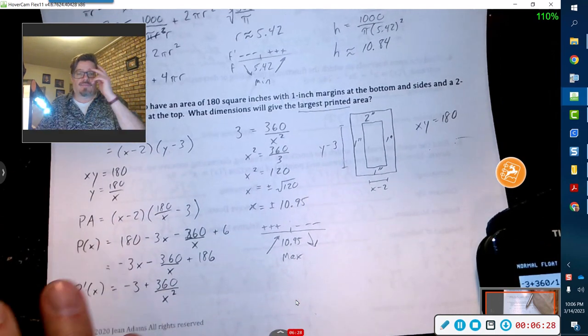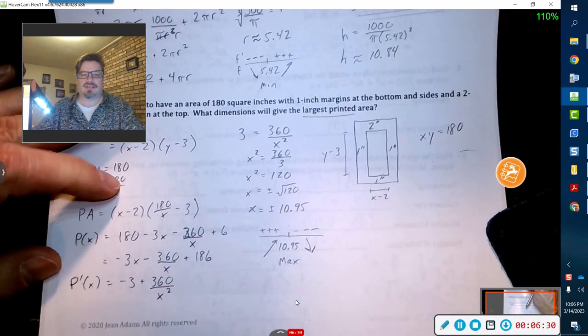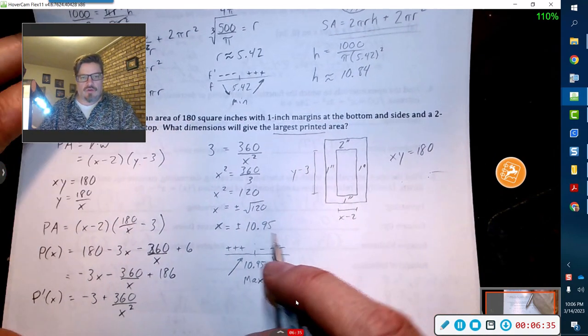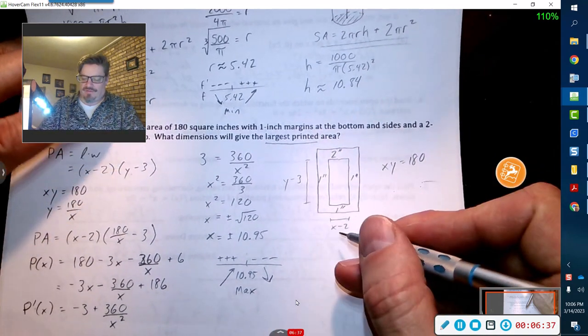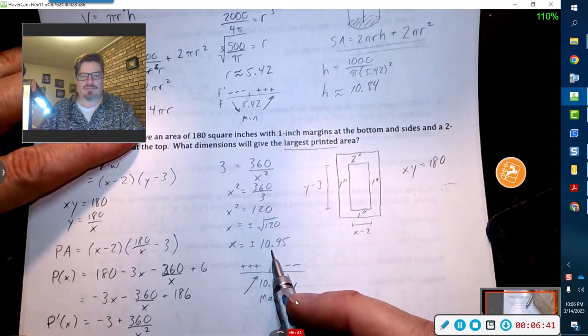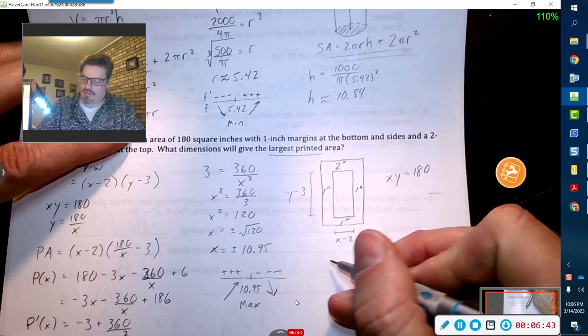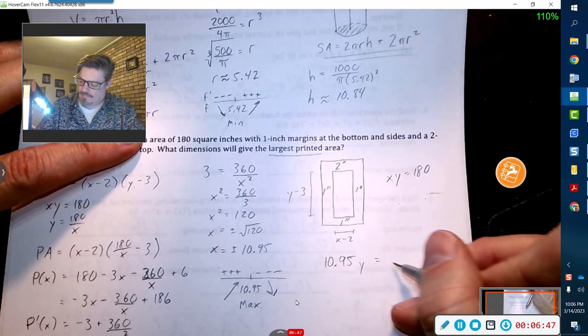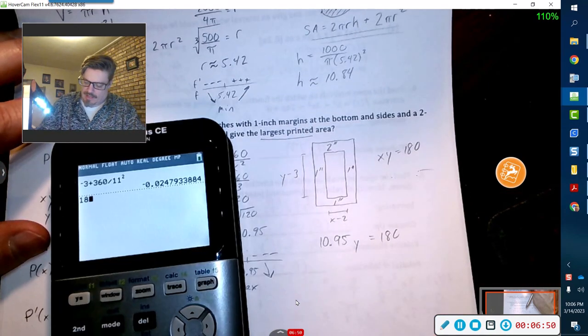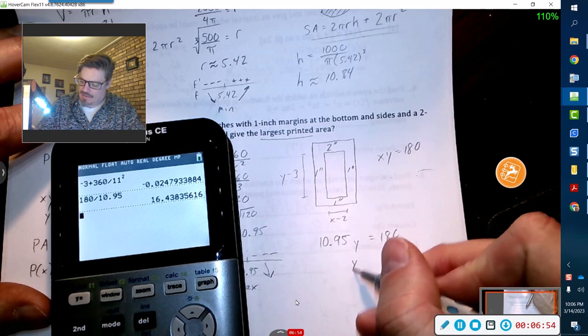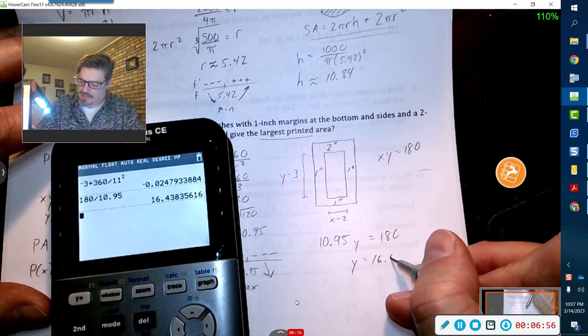We have verified that is a maximum at 10.95. So with that, then all I got to do is figure out what my y coordinate is. I know that this times the y coordinate has to equal 180, so 180 divided by 10.95. y equals 16.44.